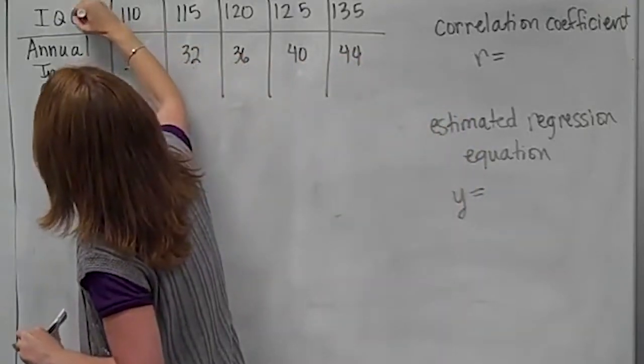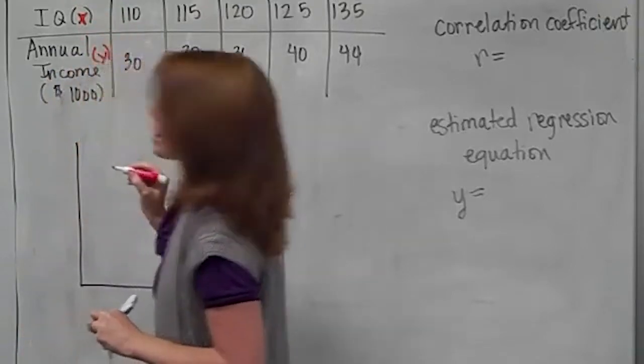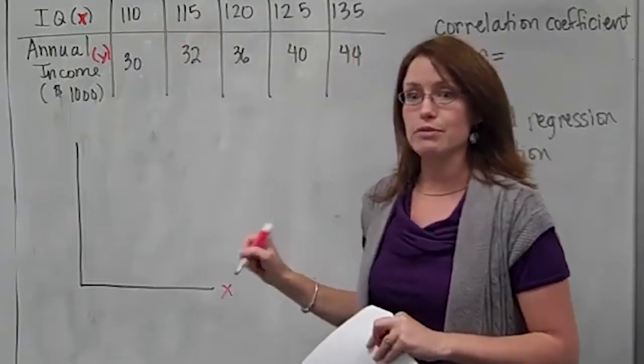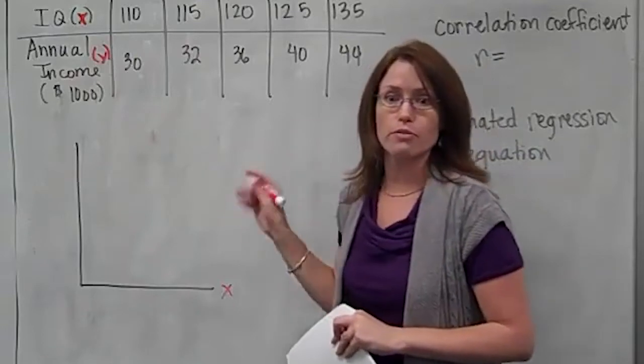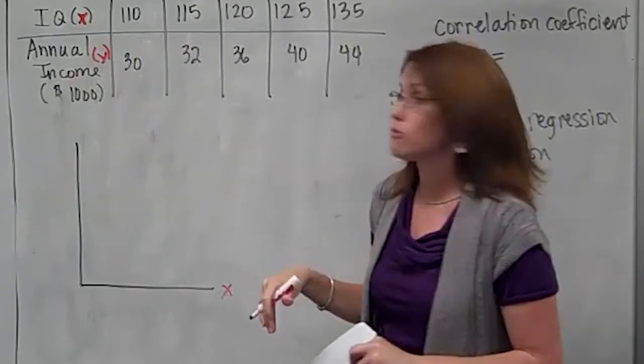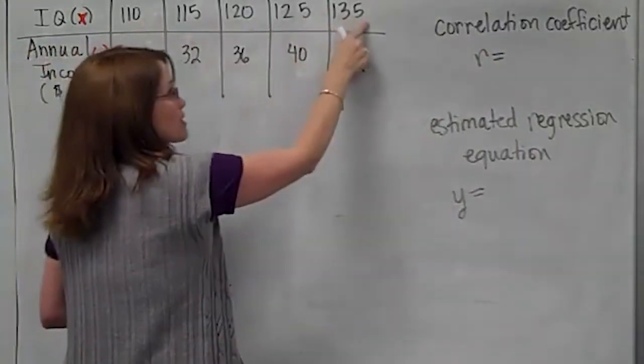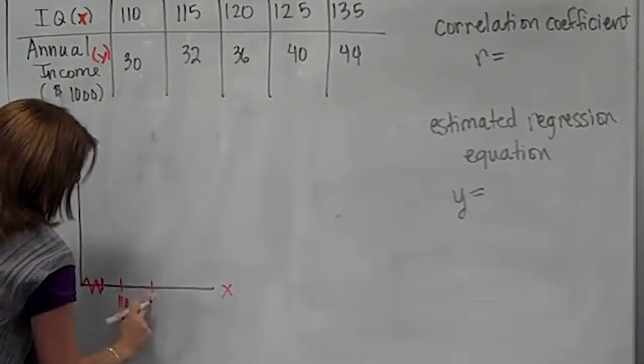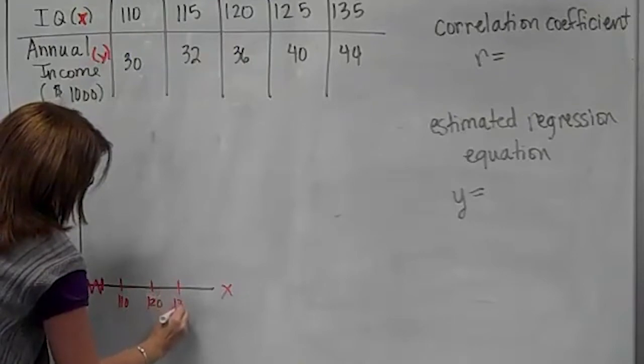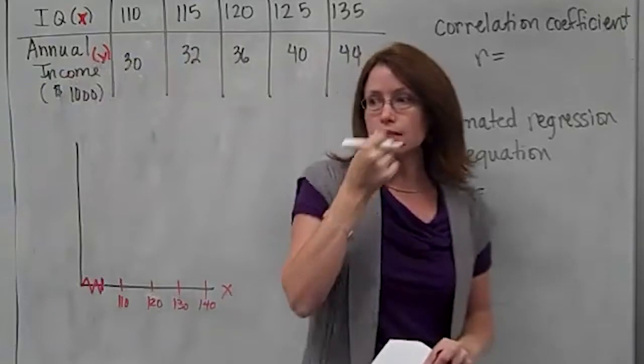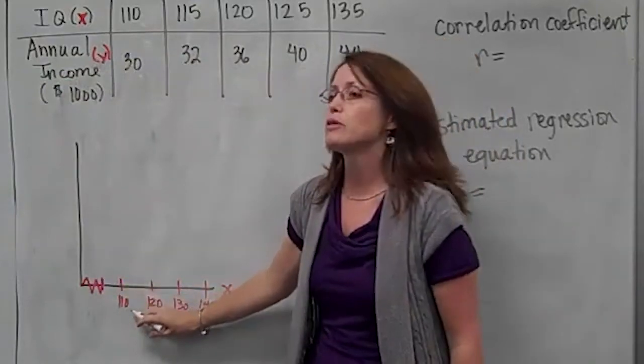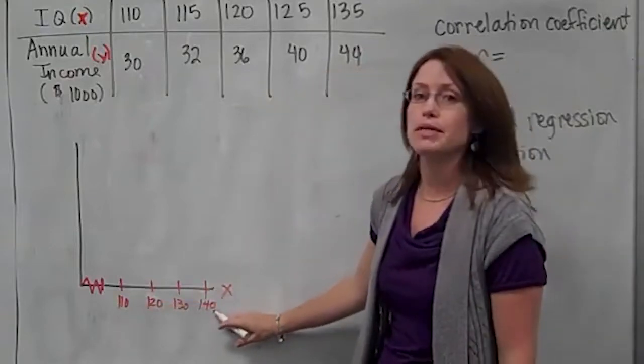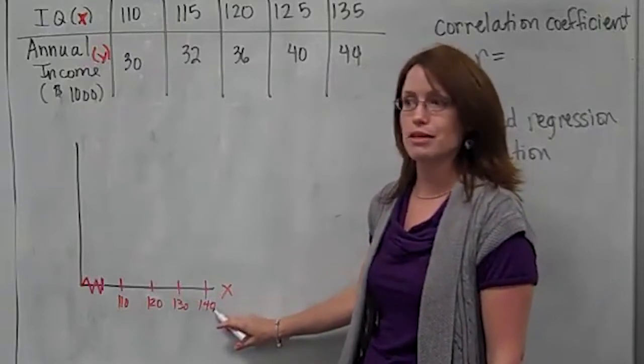IQ is going to be an X value. Income is going to be a Y value. On the X axis, I'm going to label some tick marks so I can plot these points. Just like I did with the histogram, I have to label a scale. I can't just label any old tick mark I want. I want an actual scale and then put my data on the scale.